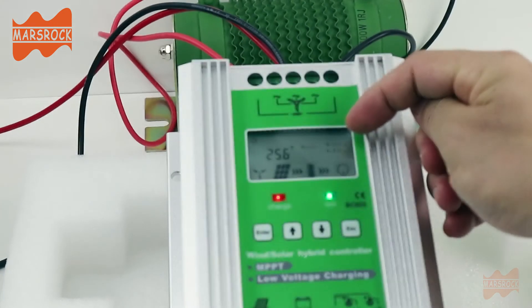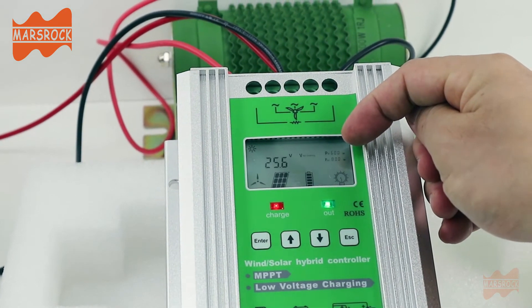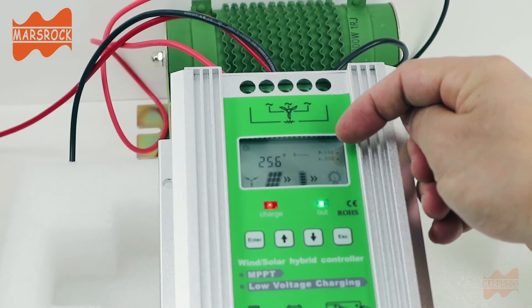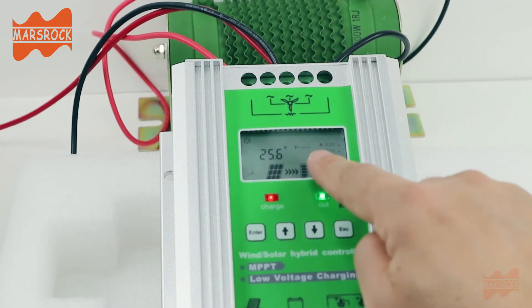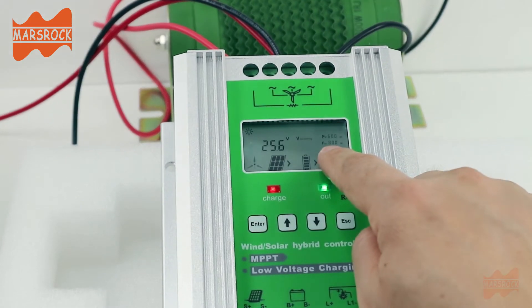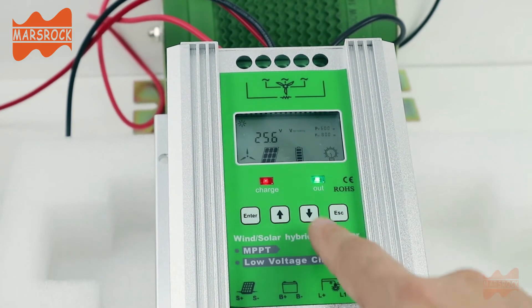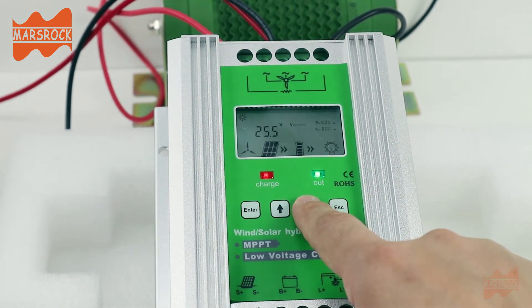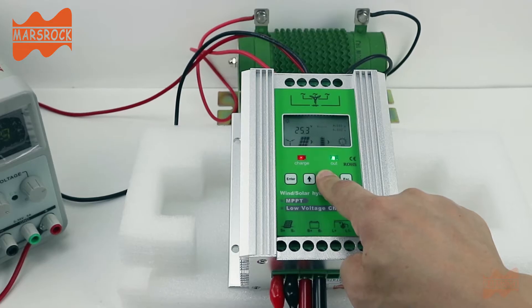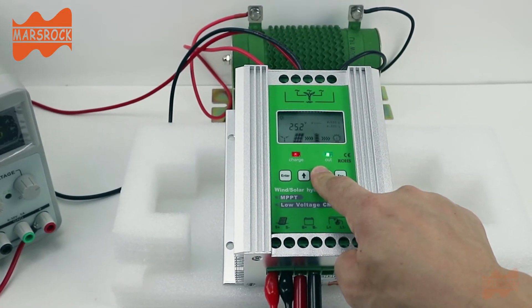PV connection allows the max power input of 600W, and wind turbine the max input is 800W. The input voltage is limited.